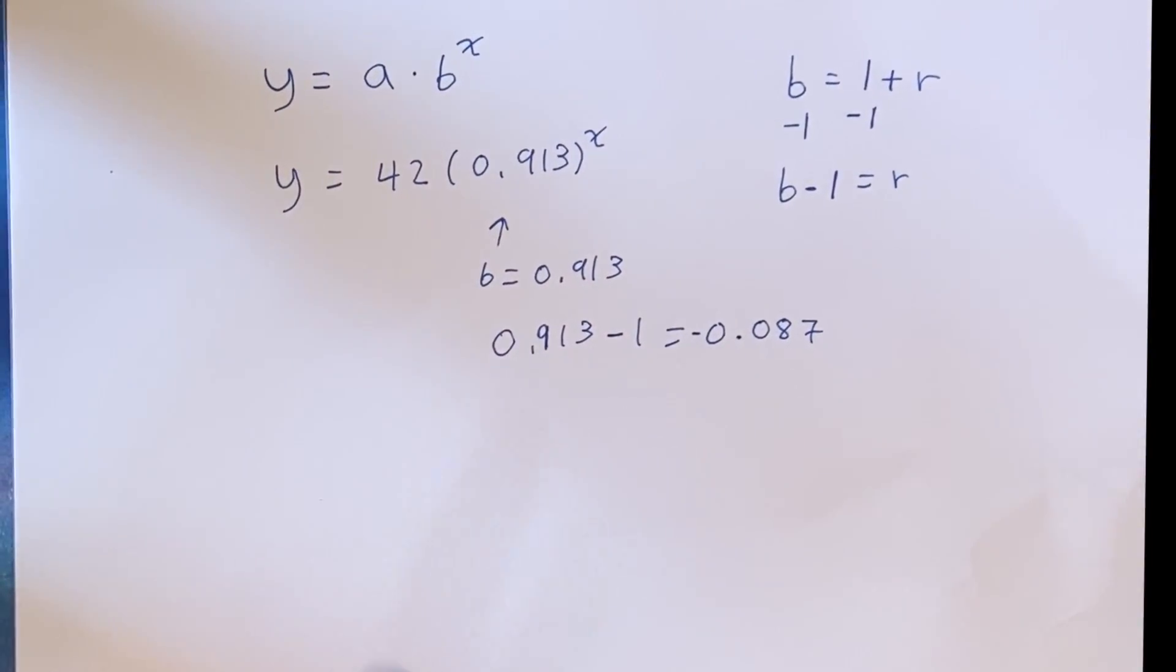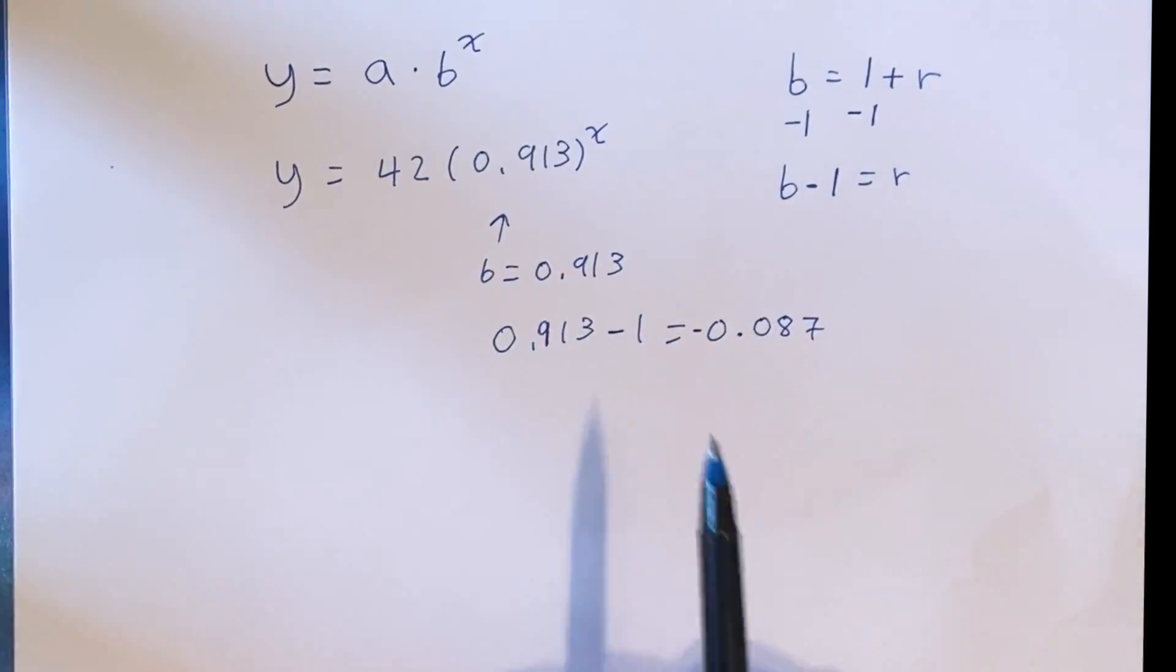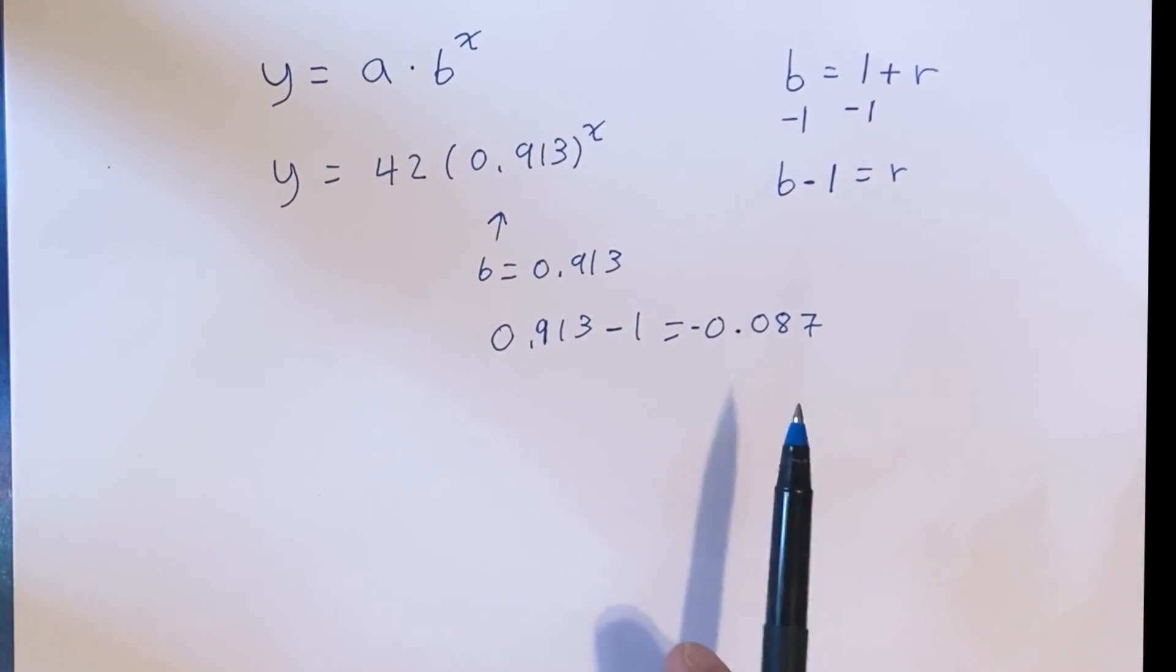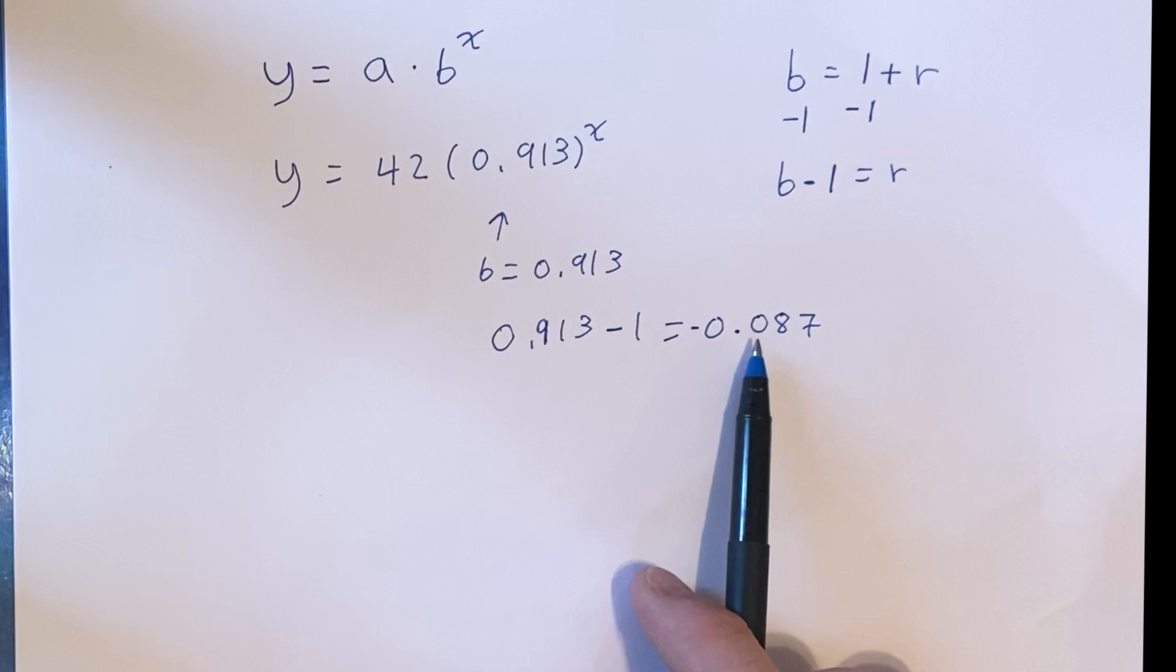So this is going to be decay. And we know it's decay because the b is less than 1, and our rate of change is going to be negative.